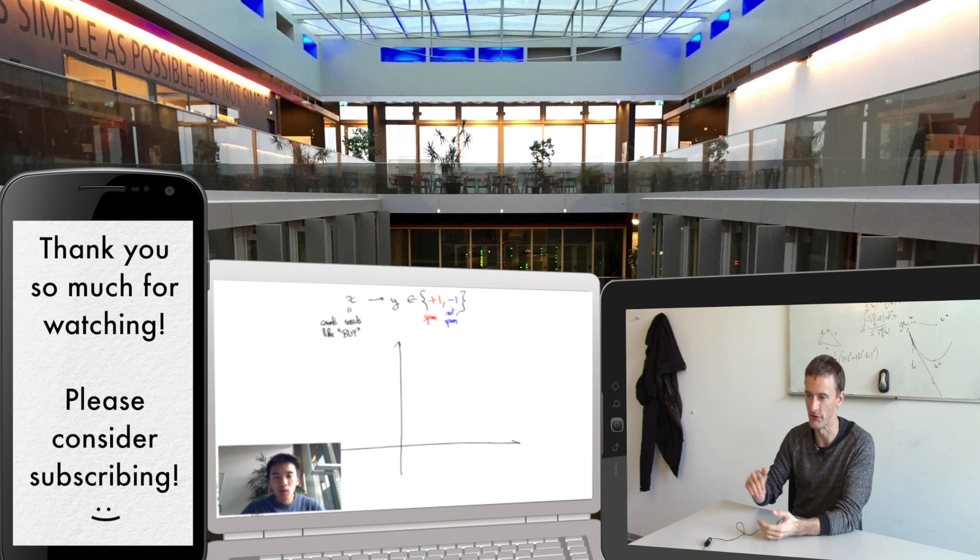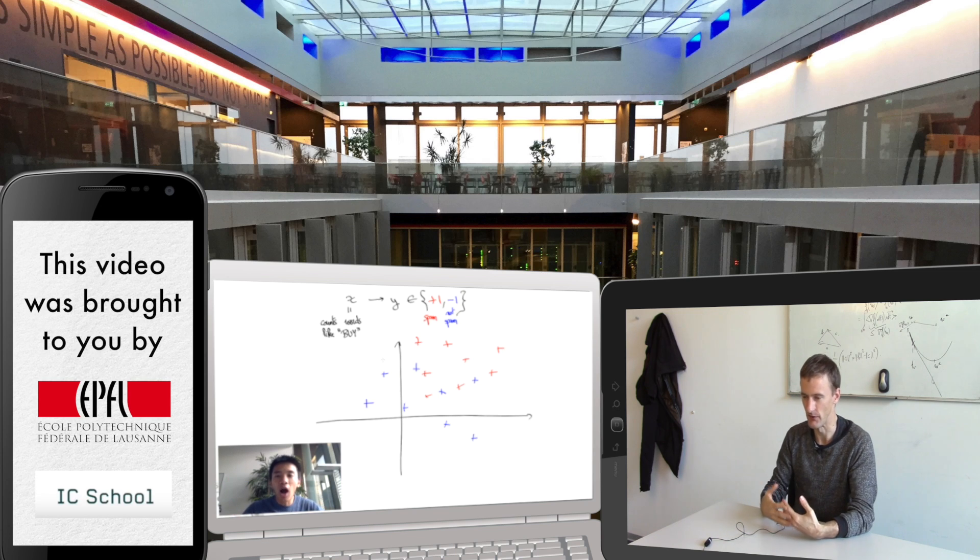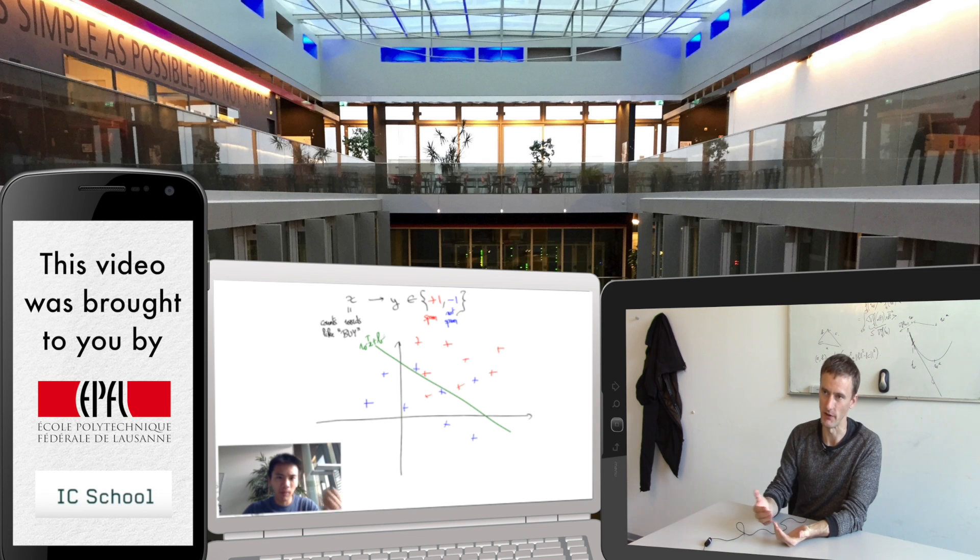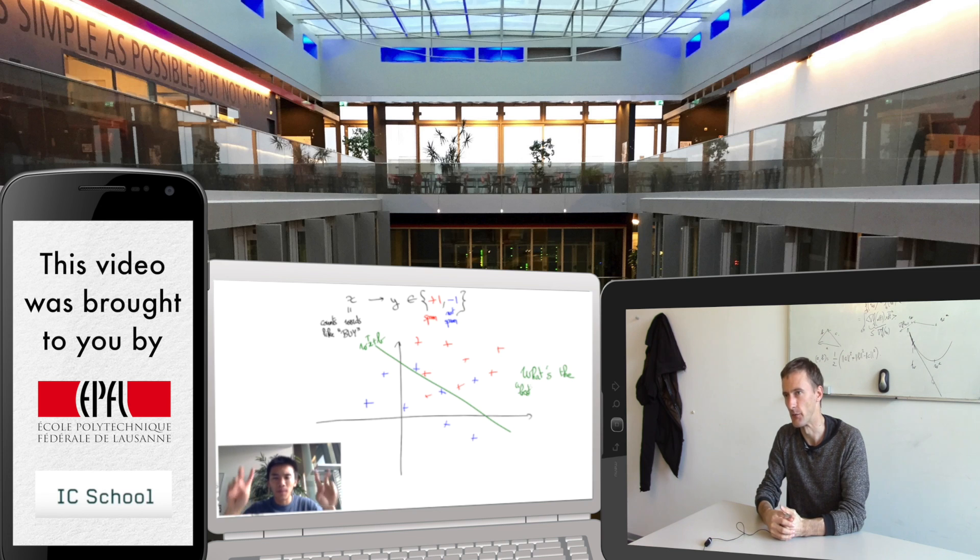One way to do so is to try to separate spam data points from not spam data points in the feature space using a hyperplane of equation w transpose x plus b. We don't understand what these neural networks actually do and why they work well and if we can make any theoretical statements about it.